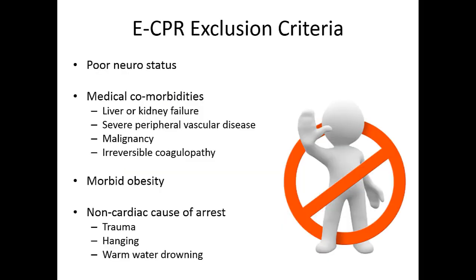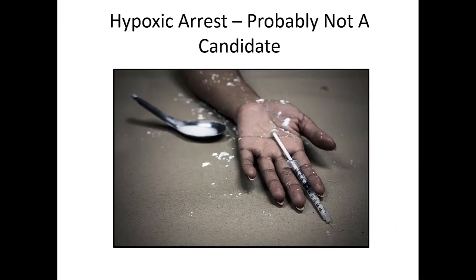There are also exclusion criteria — if patients have any of these they are not eligible. These include poor underlying neurological status such as a prior CVA with neurological deficits, a large amount of medical comorbidities like liver or kidney failure, ongoing malignancy, irreversible bleeding problems, morbid obesity making groin access incredibly difficult, or non-cardiac causes of arrest such as trauma, hanging, or warm water drowning. Anything where you're suspecting a hypoxic arrest that led to the cardiac arrest is excluded. Unfortunately, the ideal candidates — young 35 to 45 year olds — in our system are often suspected heroin overdoses, but heroin usually leads to a hypoxic arrest, making them not candidates.